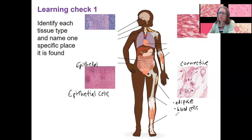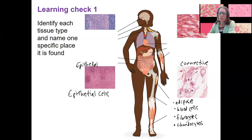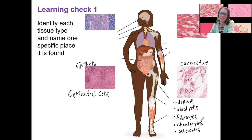Then we've got cell types that produce fibers. These are going to be called fibrocytes — some connective tissues have cells called fibrocytes. Chondrocytes are a type of cell present in cartilage; chondro refers to cartilage. Fibro refers to dense connective tissue like tendons. And then we've got osteocytes — osteo is bone, so those are the ones found in bone. Notice these three all end in the suffix -cyte, which refers to cells.